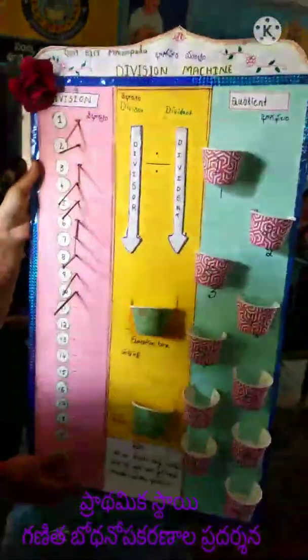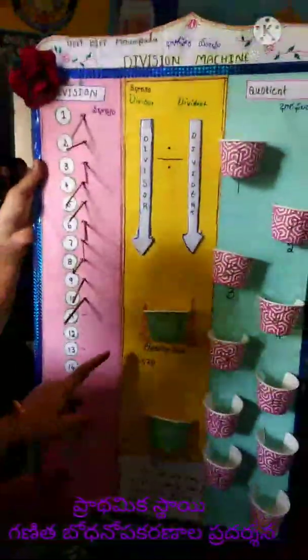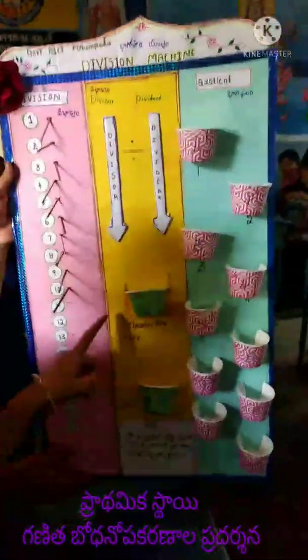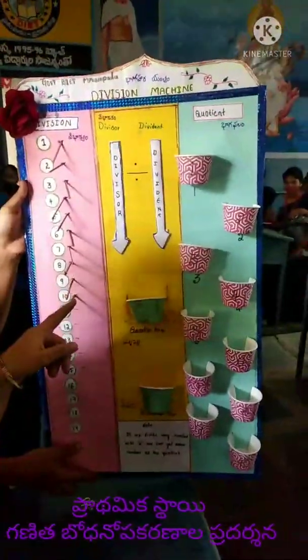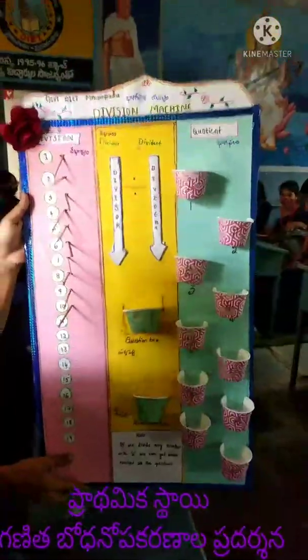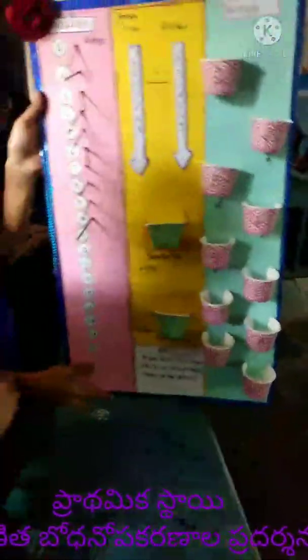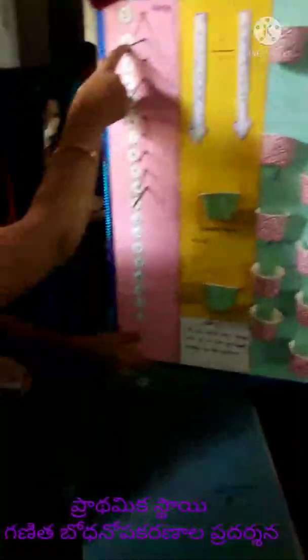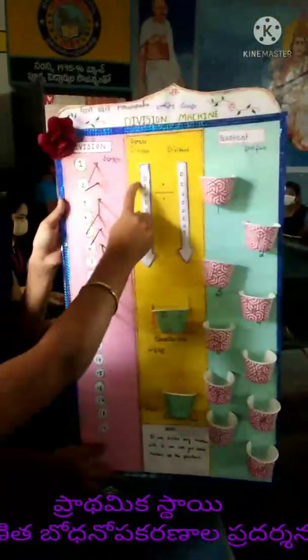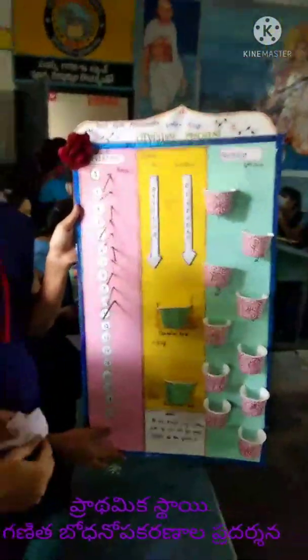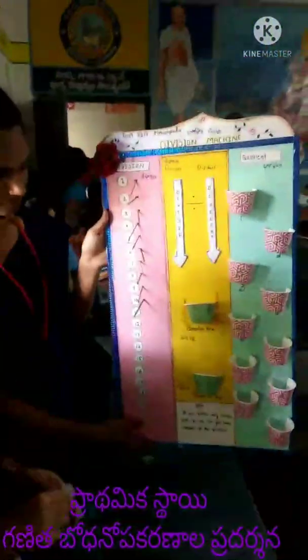This is a division machine. We prepared ELM for 4th class. The chapter is division. We prepared the division machine for each division.